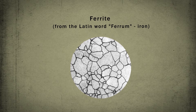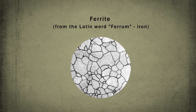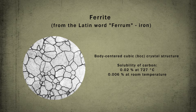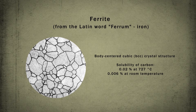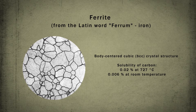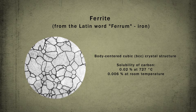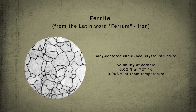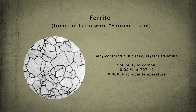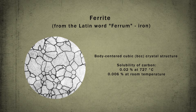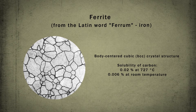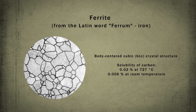Ferrite is relatively soft, plastic, and highly ferromagnetic at temperatures below 768–770°C. Under the microscope, ferrite grains have a light shape.